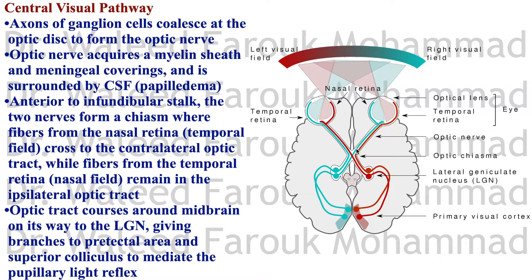Examining the fundus of the eyeball — examining the optic disc from the outside — gives a hint about the CSF pressure inside. If there is high pressure (papilledema), it results in protrusion of the optic disc inward, which can be detected through the ophthalmoscope.